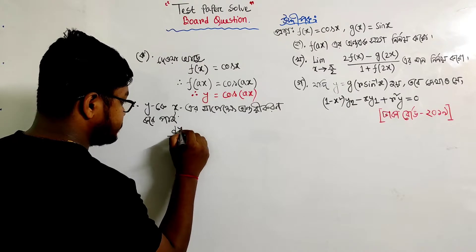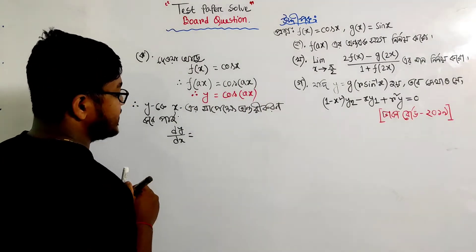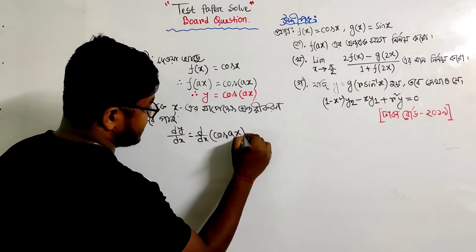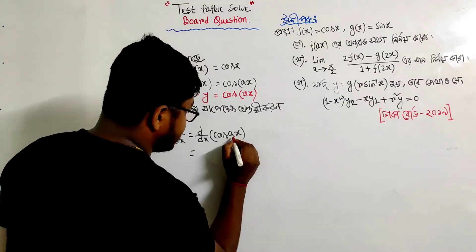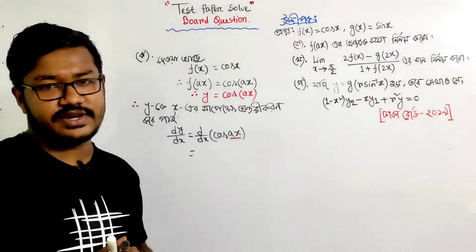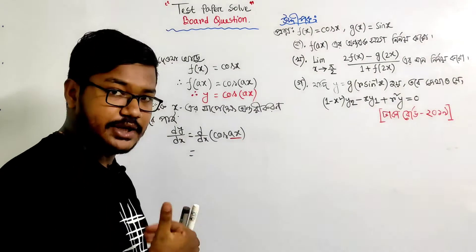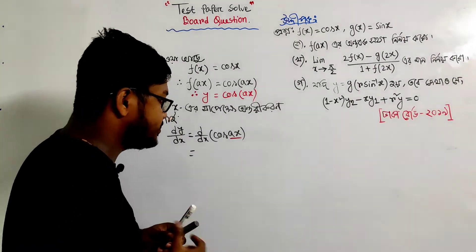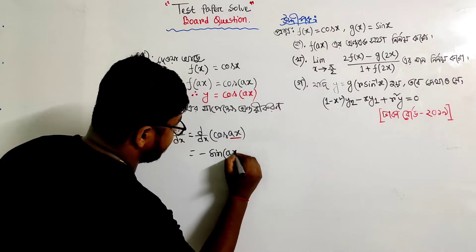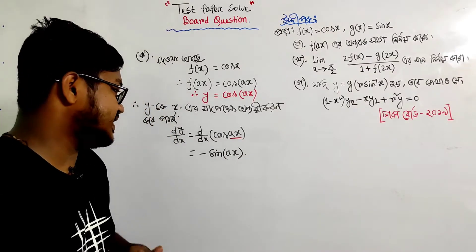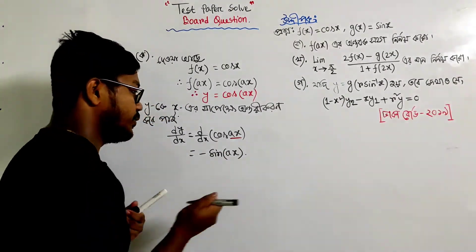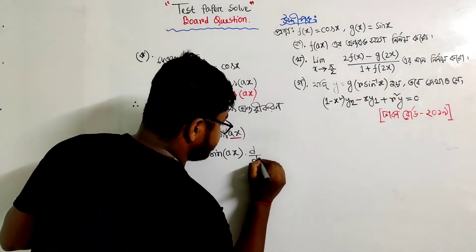The differentiation of cos x — ddx of cos x gives us a change in sign. So ddx of a·cos(ax) equals minus sin(ax) into a.